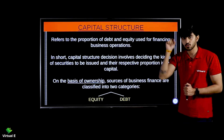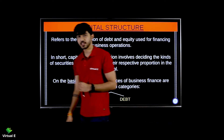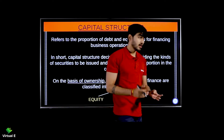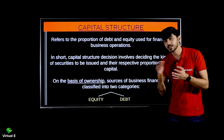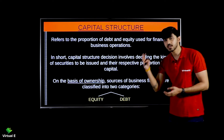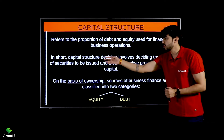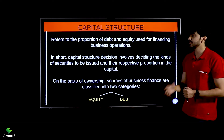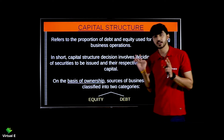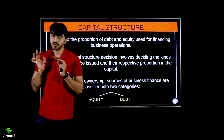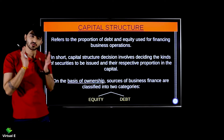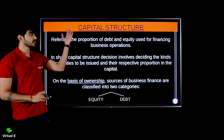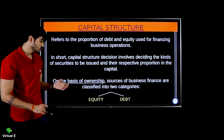Borrowing can be done in different ways - as we studied in class 11: debentures, public deposits, bank loans, loans from financial institutions, intercorporate deposits - all of these are debt. In short, capital structure decision involves deciding the kinds of securities to be issued and their respective proportion in the capital. It means deciding which source to raise money from. Based on ownership, funds are divided into two categories: equity (shareholders' funds) and debt (borrowed funds).